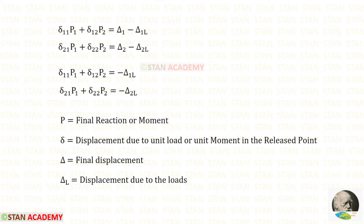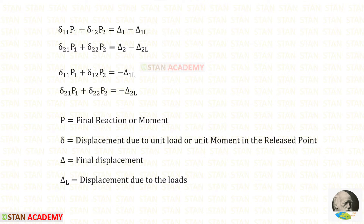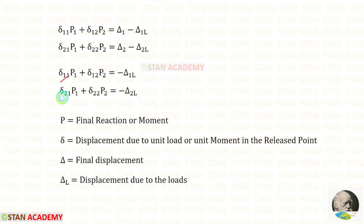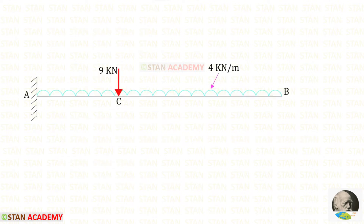To find RB and MB, we have to use these two equations. We know that in the given fixed beam at point B there is no settlement or rotation, so delta 1 and delta 2 are zero. To find these six displacements, we are going to use the unit load method. In the unit load method, first we have to find the moment M using the given loads, and for that we need to make sections.